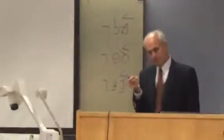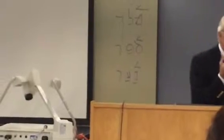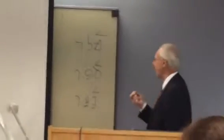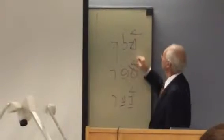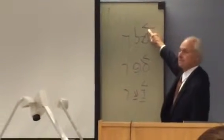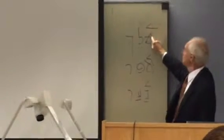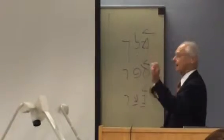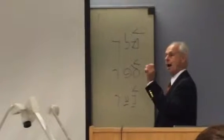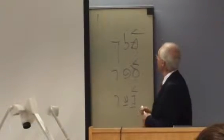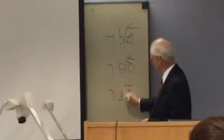What creates the class of segolate nouns is not the presence of a segol. What creates the class is penultimate stress. So this is mele, this is sefer, this is na'ar. And there are always two syllables, just like that.